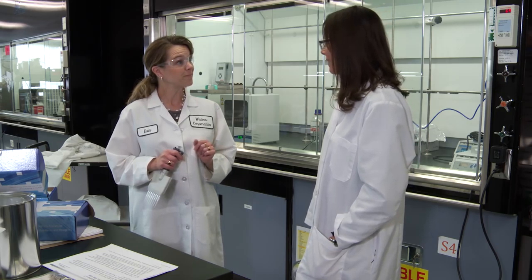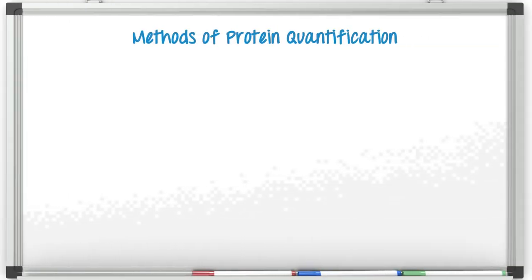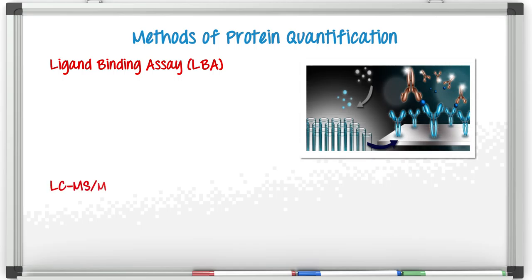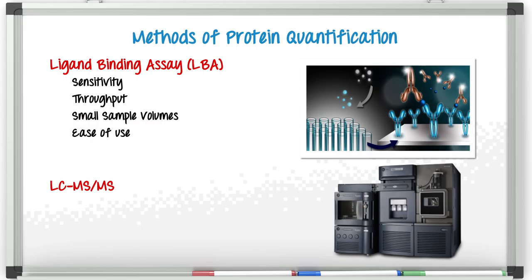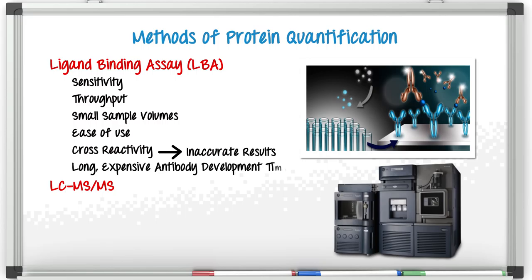There are a few common techniques people use — let me show you. There are basically two methods for doing protein quantification: ligand binding assays, or LBAs, and LC-MS. While LBAs are very high sensitivity, high throughput, and use very small sample volumes, there are some serious limitations — cross reactivity, very long development times (it can take six months to a year), it's difficult to multiplex, and they have a really limited linear dynamic range, maybe one or two orders of magnitude.